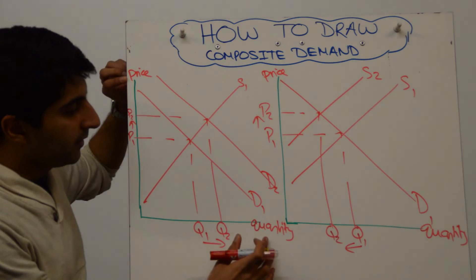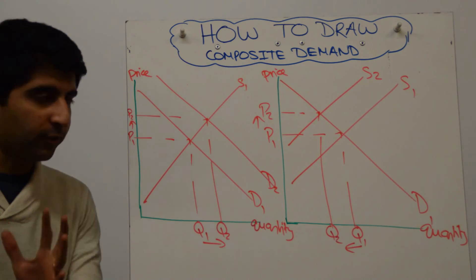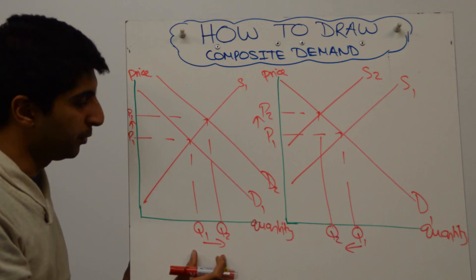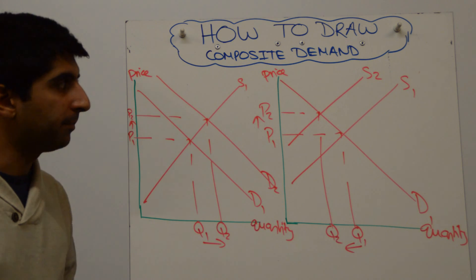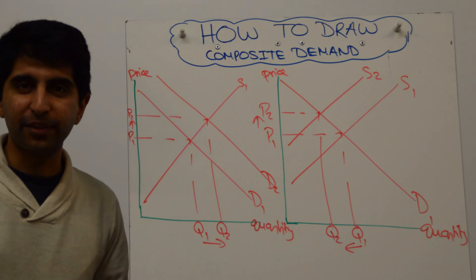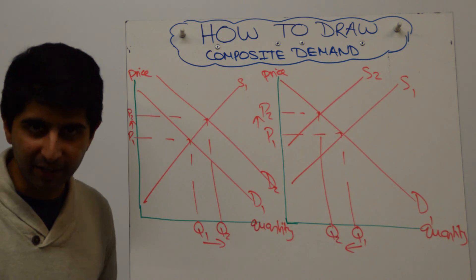Have we labelled our axes? Yes, we have. Have we labelled our curves? Yes, we have. Are all of our equilibria labelled? Yes, they are beautifully with arrows to show the changes there. That's how you show composite demand. Thanks very much for watching. I'll see you in the next video.